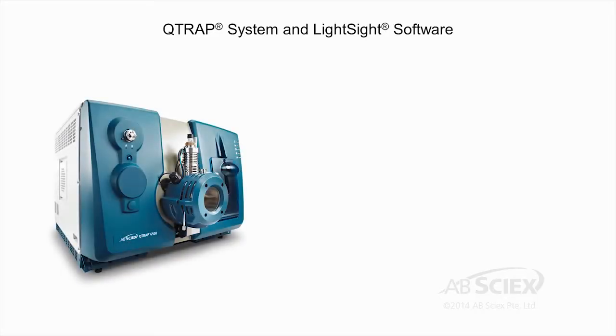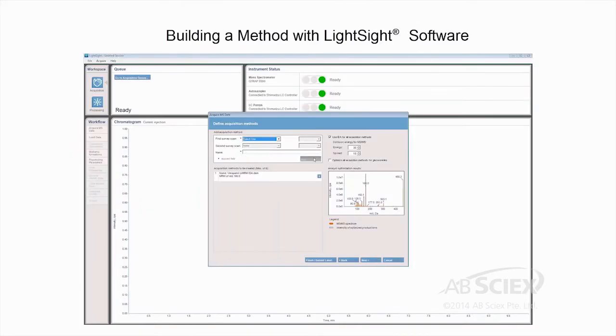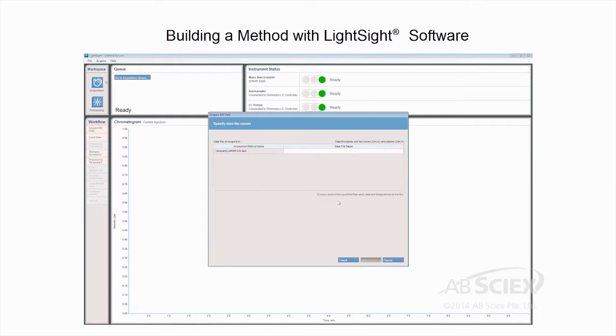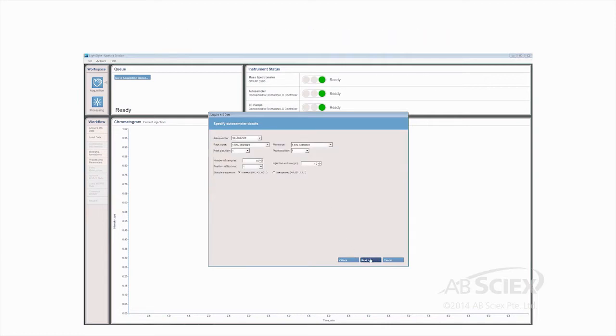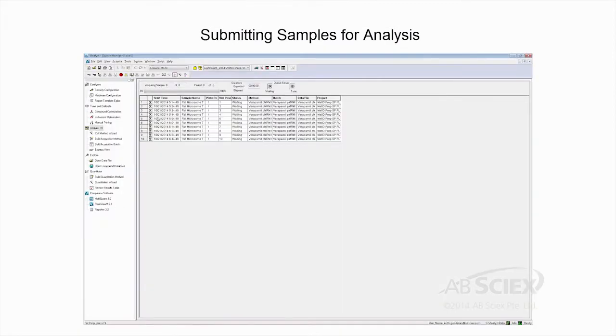The second is our QTRAP line of hybrid triple quadrupole linear ion trap instruments along with LightSight software. Results are obtained faster with our integrated QTRAP solutions. Simply build a comprehensive targeted metabolite method with LightSight software and submit the samples for analysis on the QTRAP. A single sample analysis can provide both qualitative and quantitative met ID information.